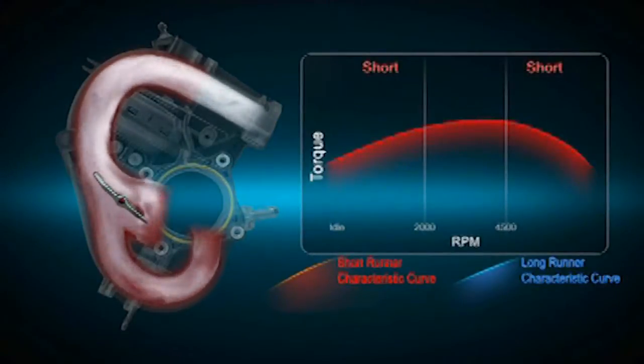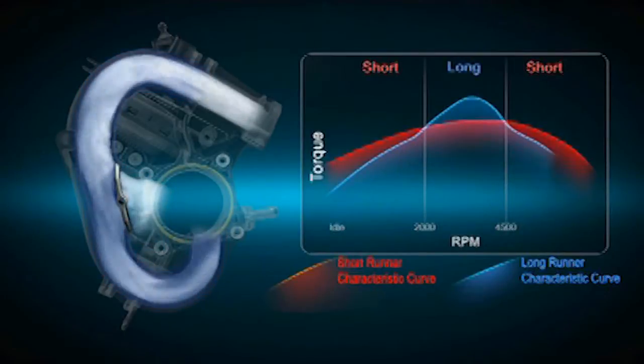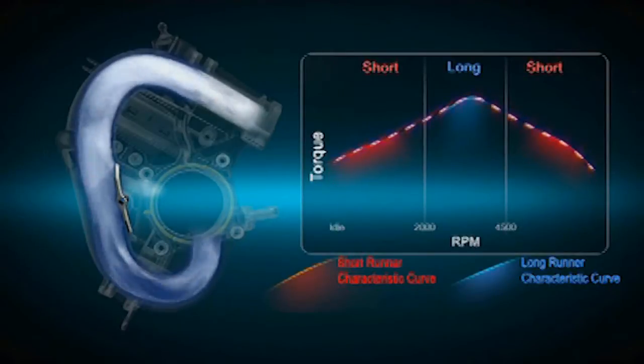At low and high speeds, intake air flows through a short runner and at mid-range speeds it flows through the long runner. This helps to optimize engine performance in all operating conditions.